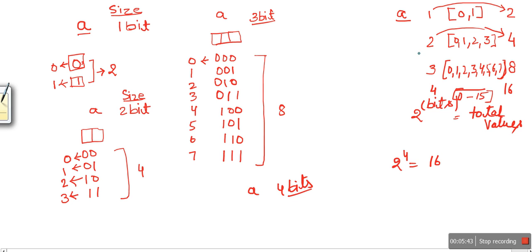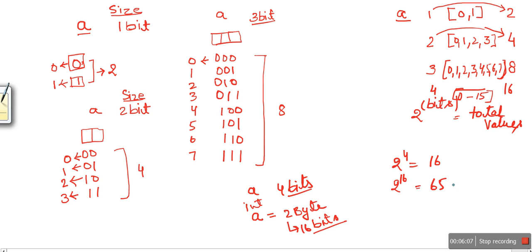Now let's find out the range for an integer variable in C. As we know, in C the data size for an integer variable is 2 bytes, which is 16 bits. Applying the formula 2 to the power of 16, we get 65536. So an integer variable can store values from 0 to 65535. This is the positive range, or you can say the unsigned range.